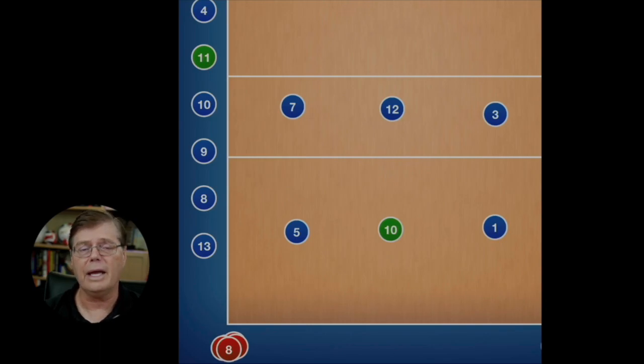An exchange is different than a substitution. A substitution happens in front of the 10-foot line and it is required for you to wait for the referee to motion you in, so that the bookkeeper at the desk can make a record of that change, that substitution. Liberos don't substitute, they exchange. All the other players can exchange and substitute, but they can only exchange in the back row.